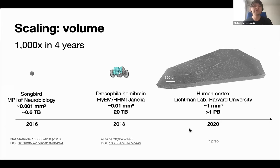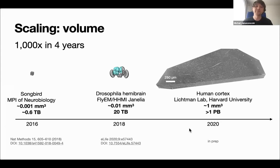There's also been significant progress in tackling significantly larger volumes of data — about a thousandfold increase in the last four years. When we started, state-of-the-art was a small cube about a tenth of a millimeter on a side. Going forward, we worked on a relatively large fragment of a Drosophila brain, and recently volumes of about a cubic millimeter have been reached, such as this human cortex sample from the Lichtman Lab — large enough to cover all cortical layers all the way from pia to white matter.